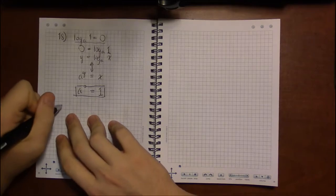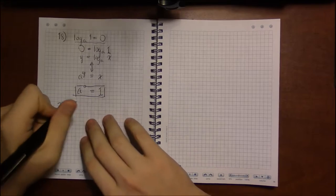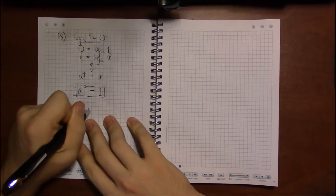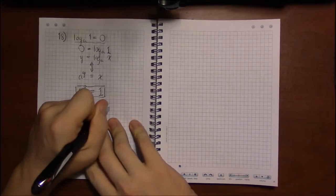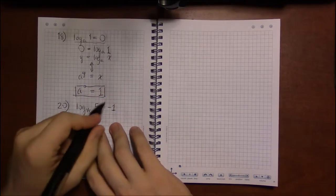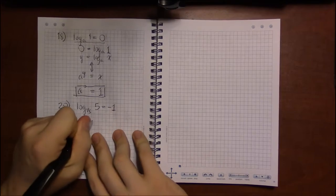Let's look at problem 20, where we're told that log base one-fifth of 5 is equal to negative 1. We rewrite this so that the log's on the right-hand side of the equation.